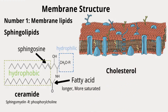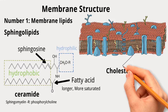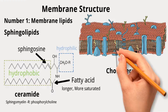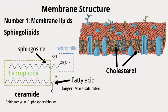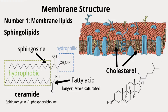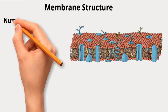Cholesterol is another lipid found in certain membranes, especially in animal cells, where it can make up a significant portion of the plasma membrane. Cholesterol molecules are oriented with their hydrophilic hydroxyl group at the membrane surface, while the rest of the molecule is embedded in the lipid bilayer. Cholesterol has flat, rigid rings that influence the movements of the fatty acid tails of phospholipids in the membrane.